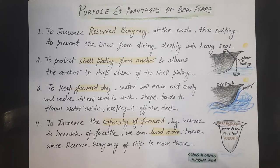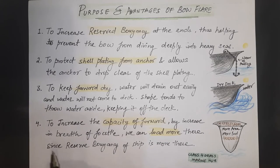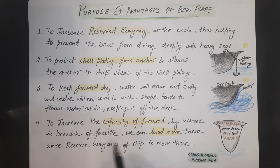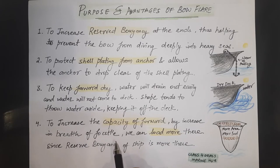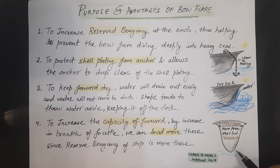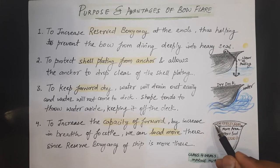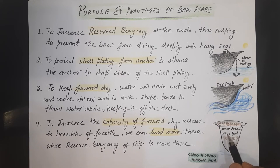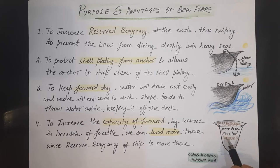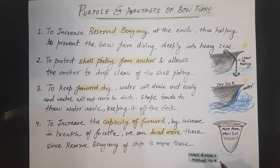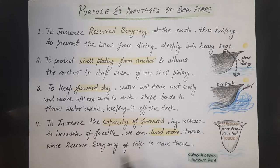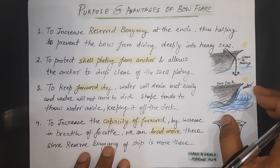The fourth point is to increase the capacity of the forward by increasing the breadth of the forecastle. The shape of the flare, geometrically, increases the forward breadth, thereby giving more area and more space to load more items. We can load more there, and since the reserve buoyancy of the ship is also greater on the forward side, this is the fourth advantage.